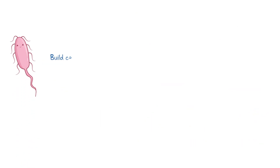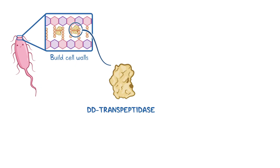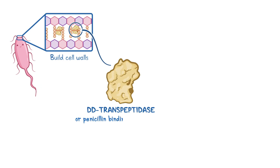To build their cell walls, bacteria need an enzyme called DD transpeptidase, or penicillin binding protein, or PBP for short.